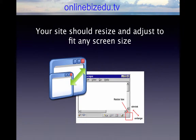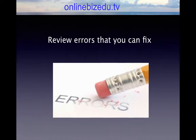Your site should resize and adjust to fit any screen size. Drag the corner of the web browser window on your computer and you will see a resize right before your eyes. Look at your website on your mobile phones and tablets to see how it looks and how people are interacting with your content. Use Google's PageSpeed Insights tool to check for page performance. Review errors that you can fix — errors related to your content that you can improve upon. Ensure your images are sized appropriately as well. Oversized images are going to slow load times on mobile devices and on your website.